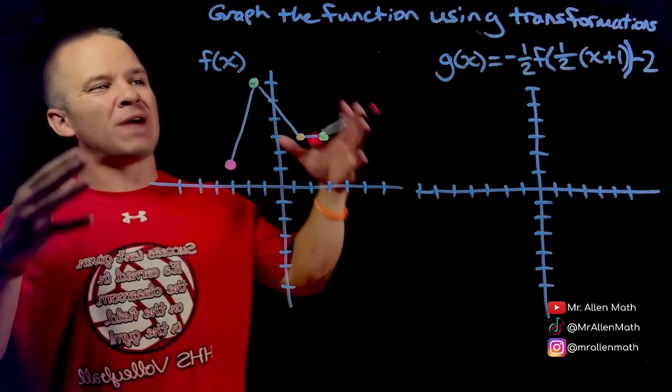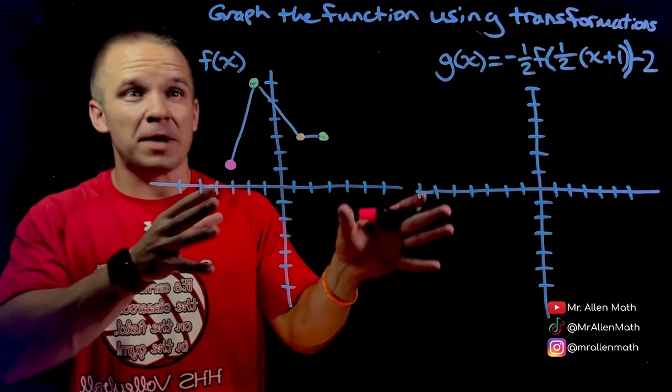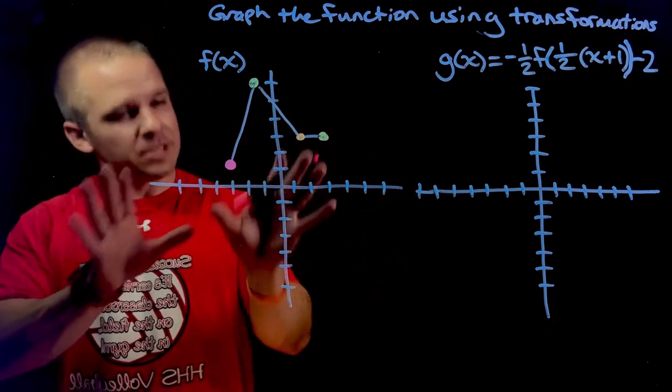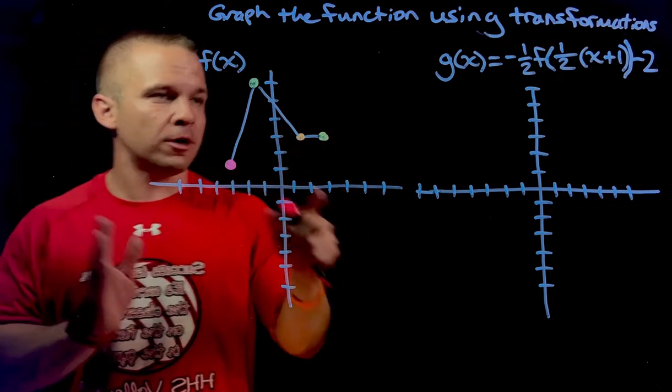What's happening, dogs? Mr. Allen here. We're about to graph this dope g(x) function that looks crazy using transformations from our f(x) function, which doesn't even have an equation, but it does look like we have a graph here with one, two, three, four critical points in different colors.